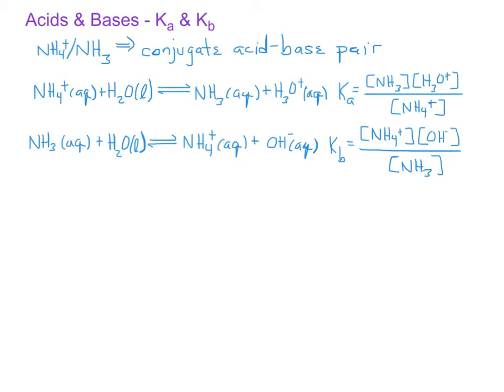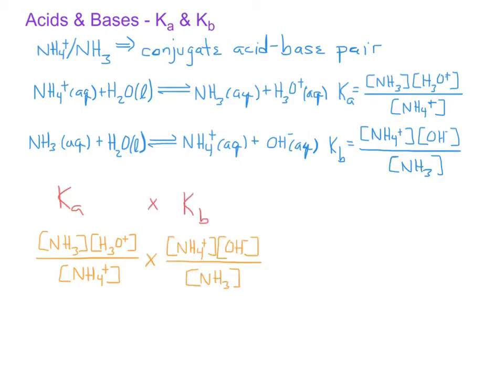What we find is that if we multiply the Ka for the weak acid component of a conjugate acid-base pair by the Kb value for the weak base component of a conjugate acid-base pair, the Ka times the Kb is equal to Kw.